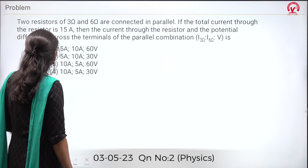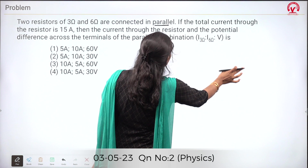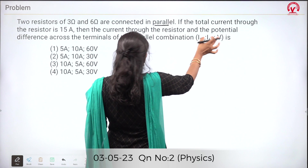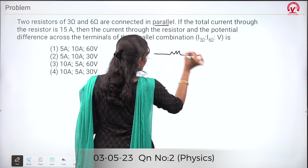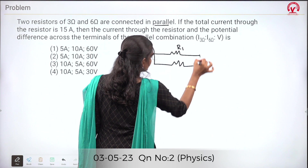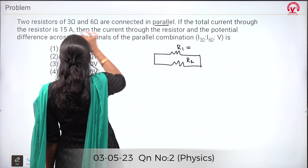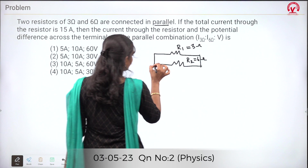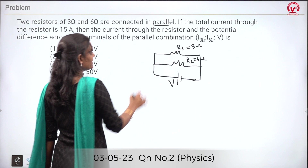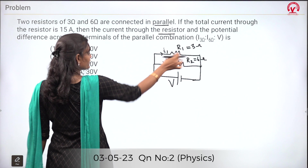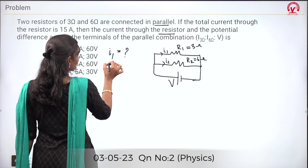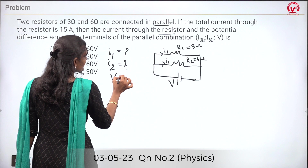Two resistors of 3 ohm and 6 ohm are connected in parallel. The total current through the resistors is 15 ampere. We need to find the current through each resistor and the potential difference between the terminals. R1 = 3 Ω and R2 = 6 Ω are connected in parallel. I1 and I2 are the currents flowing through each resistor.